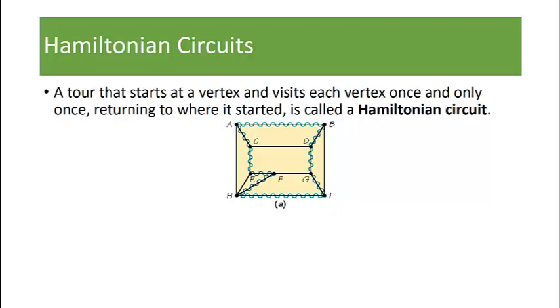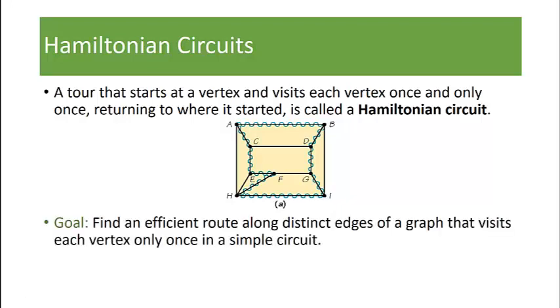We visit each vertex of our graph exactly once and start and stop at the same vertex. That is called a Hamiltonian circuit. Our goal often is to find an efficient route along distinct edges of a graph that visits each vertex only once in a simple circuit.